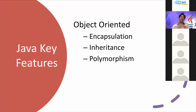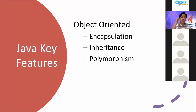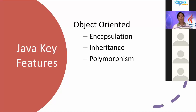One of the reasons why people started learning Java and other OOPLs is because of the three main features, namely encapsulation, inheritance, and polymorphism. When we say encapsulation, it has something to do with data protection.